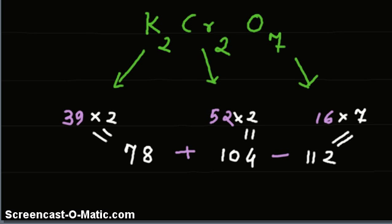So, if we sum up all these three things, we get molar mass of potassium dichromate which is equal to 294.